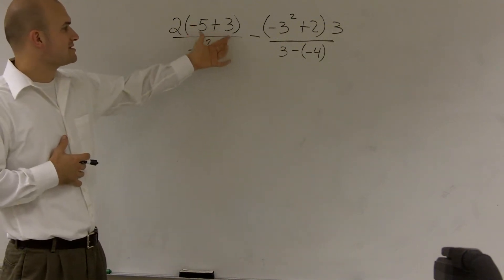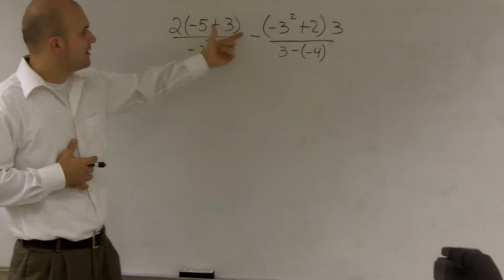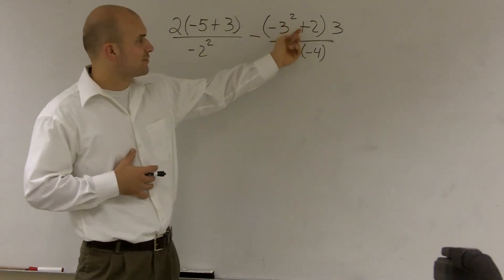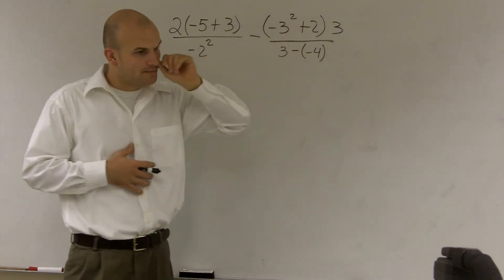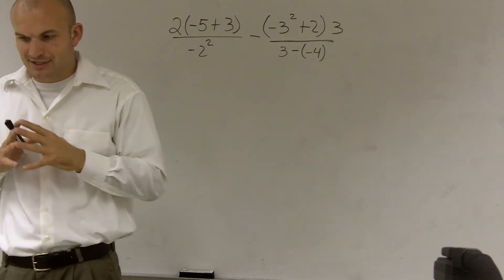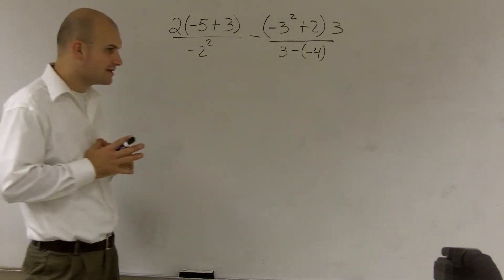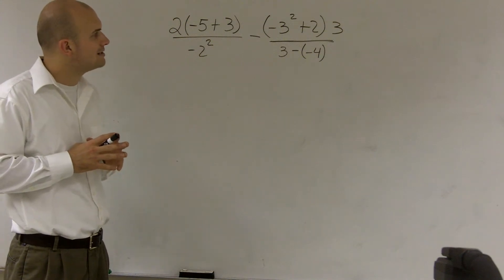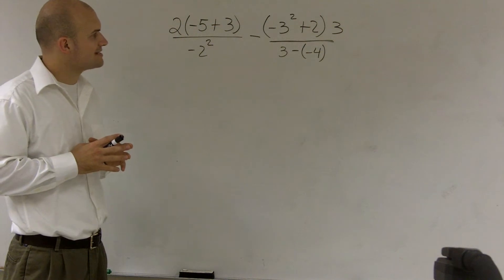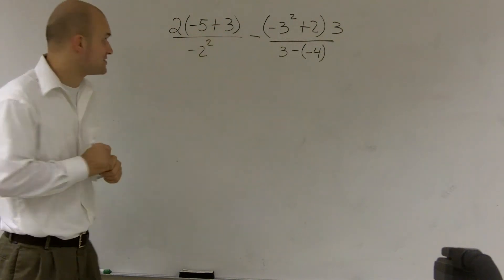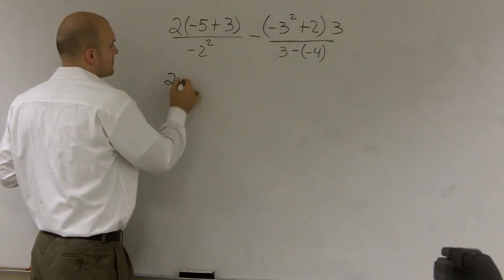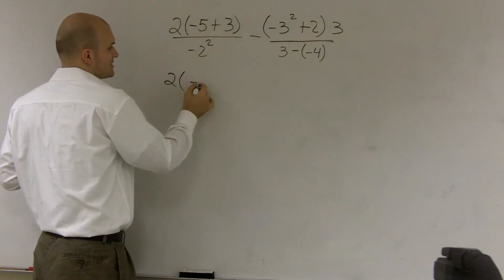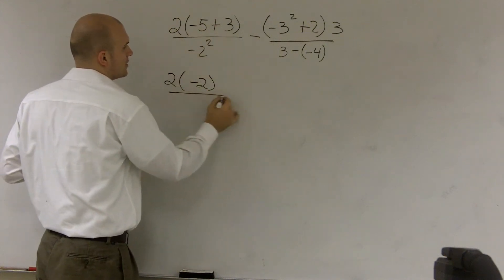I have here inside parentheses, I have a negative 5 plus 3, and then here I have a negative 3 squared plus 2. What I can do with this problem is do inside my parentheses first. So I have 2, negative 5 plus 3 is a negative 2, all over...